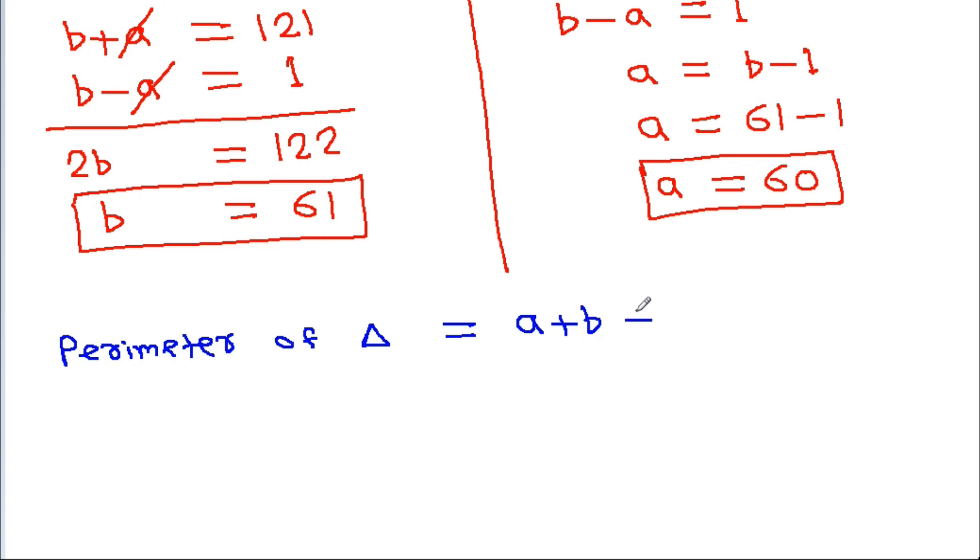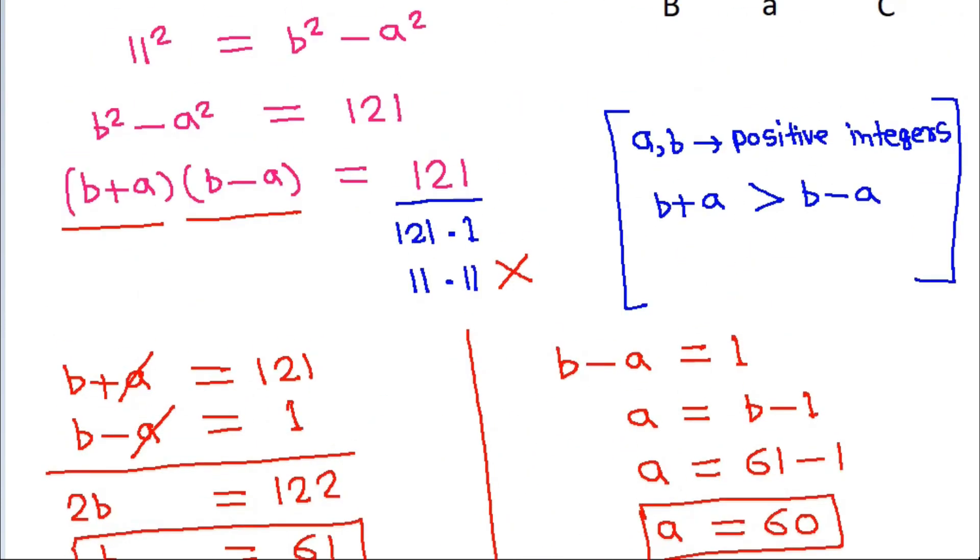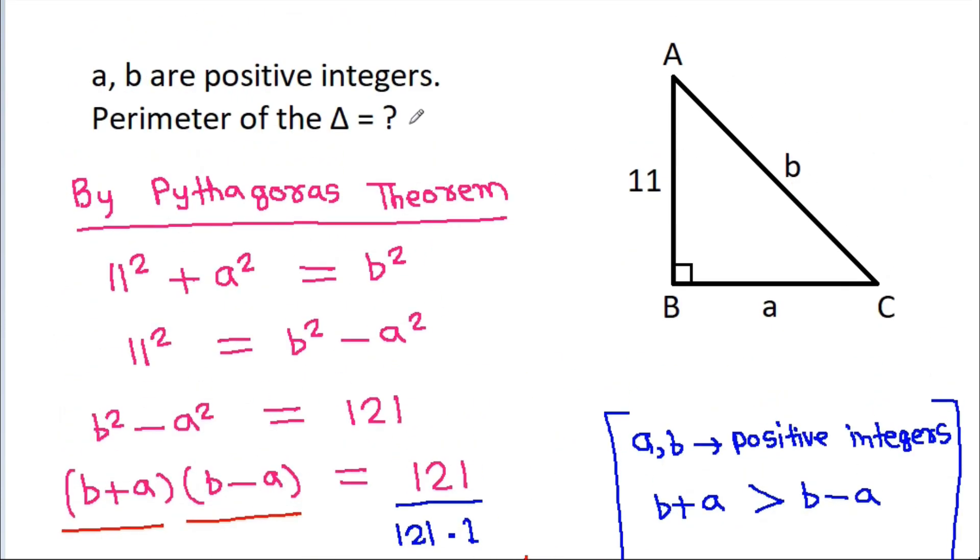The perimeter of the triangle is a + b + 11 = 60 + 61 + 11 = 132.